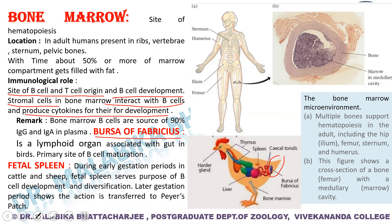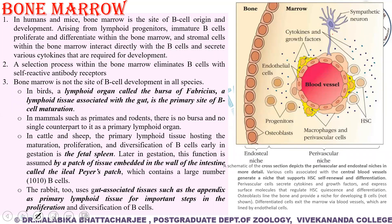Bone marrow is found within the marrow of long bones in the medullary cavity. The marrow region contains endothelial cells, cytokines, growth factors, macrophages, perivascular cells, and hematopoietic stem cells that give rise to lymphoid precursor cells and then B lymphocytes. Bone marrow is not the only site for B cell development — in humans and most mammals it is bone marrow, but in birds it is the Bursa of Fabricius.